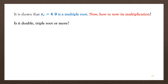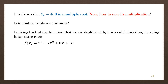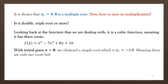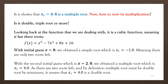The root x equal to 4 is confirmed as a multiple root, but the question remains: how many times is it repeated — is it a double root, triple root, or more? The function is cubic, so it must have three roots total. With initial guess x equal to 0 we found x equal to minus 1 as one root, leaving two roots. Since x equal to 4 is a multiple root and accounts for the remaining two, it must be a double root.